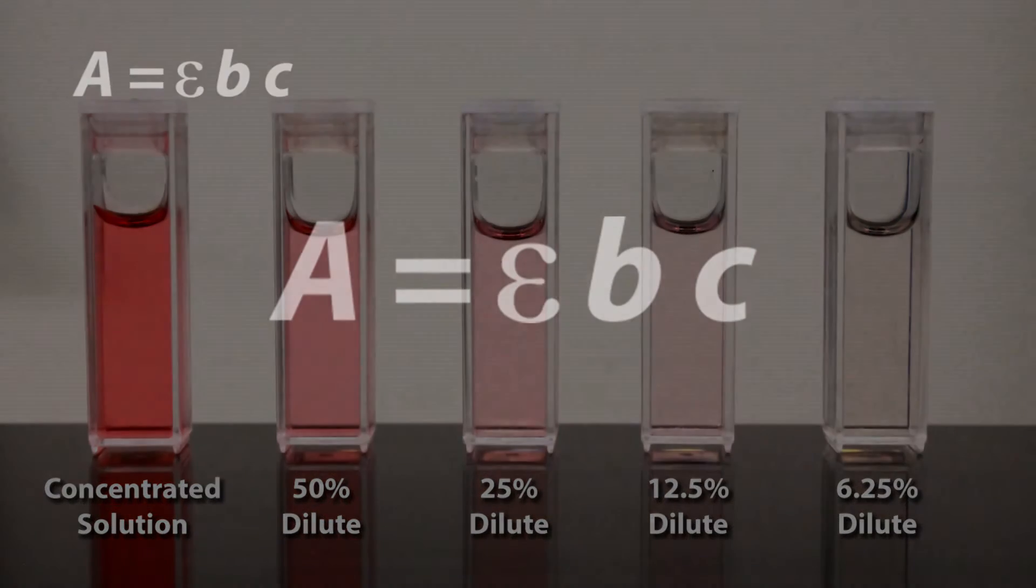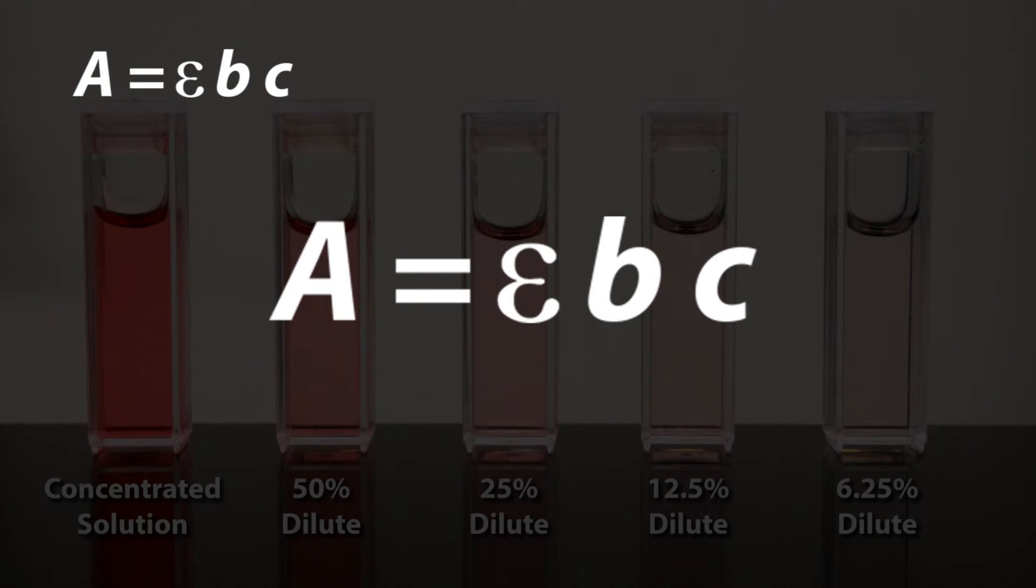We will talk about Epsilon and B in a few minutes, but for now let's say these variables are constant. Focusing just on the concentration and absorbance, what happens to the absorbance if we dilute the most concentrated solution by 50%? The absorbance will decrease by 50% as well.